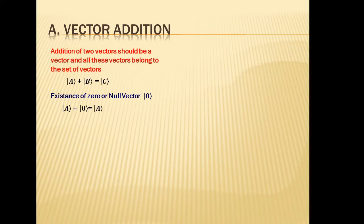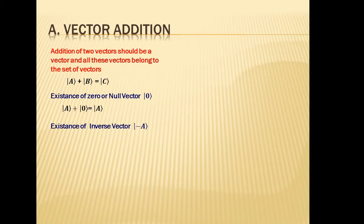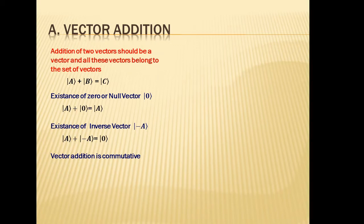The vector addition property has further implications. First, there must be an existence of a zero or null vector — a vector which when added to another vector gives that same vector back: a + null vector = a. Second, there must be an existence of an inverse vector — when you add a vector to its inverse you get the null vector: vector a + inverse of vector a = null vector. Third, vector addition must be commutative — the order of addition doesn't matter.